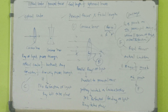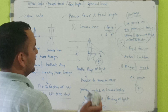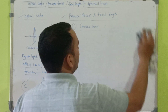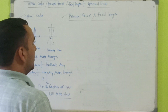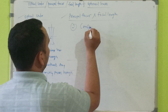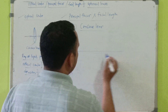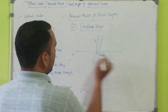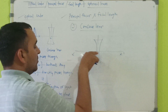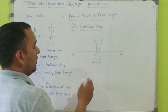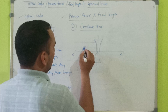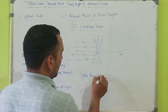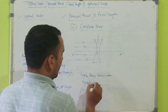The next topic is principal focus and focal length in case of a concave lens. For that, we draw a concave lens with a principal axis marked as XX dash, and the optical center marked as C. A light ray passing through the optical center passes directly without any deviation. Now there are a number of light rays which are parallel to the principal axis.